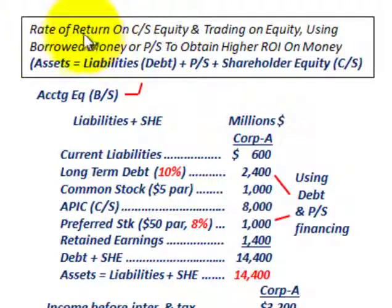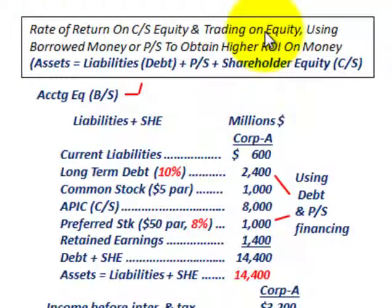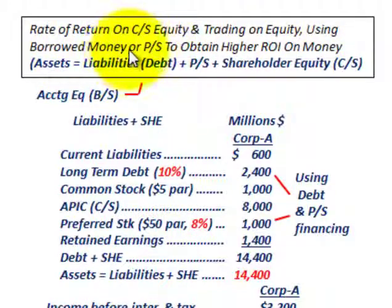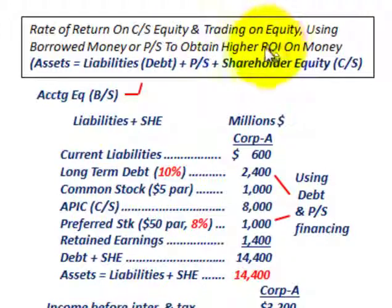What we're going to be going over here is the rate of return on common stock equity and trading on equity. Trading on equity is where you're using borrowed money or issuing preferred stock to obtain a higher rate on the investment on those monies you're borrowing.